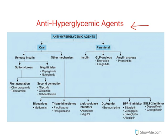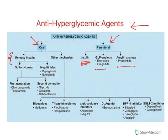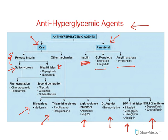Now, anti-hyperglycemic agents — there is a big list, but let us simplify things. You have oral antidiabetics and parenteral drugs. In parenteral, insulin is the major course of treatment. For oral classes, there are agents which cause release of insulin, known as insulin secretagogues: sulfonylureas and meglitinides. Other drugs acting by different mechanisms include biguanides, thiazolidinediones, alpha-glucosidase inhibitors, D2 agonists, dipeptidyl peptidase-4 inhibitors, and sodium glucose co-transporter inhibitors.